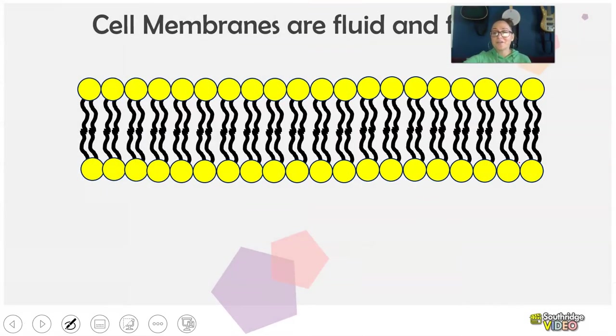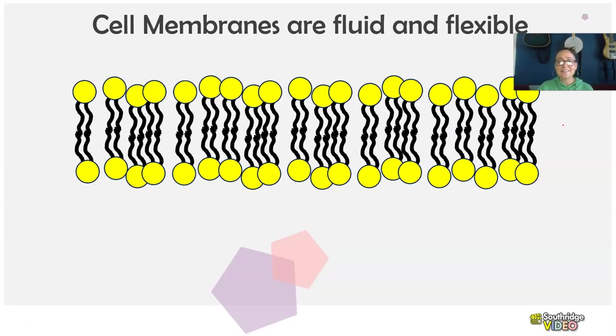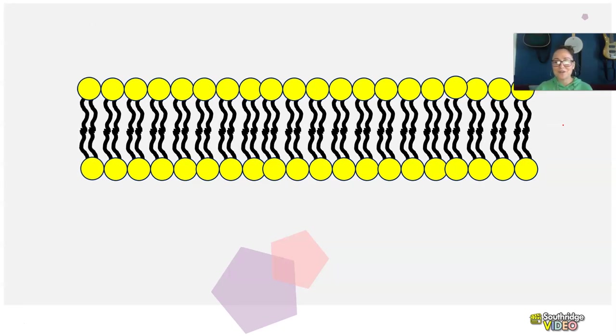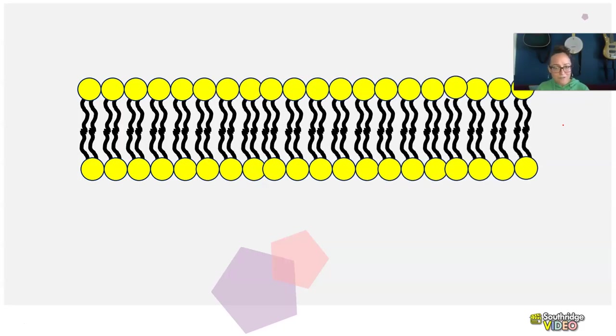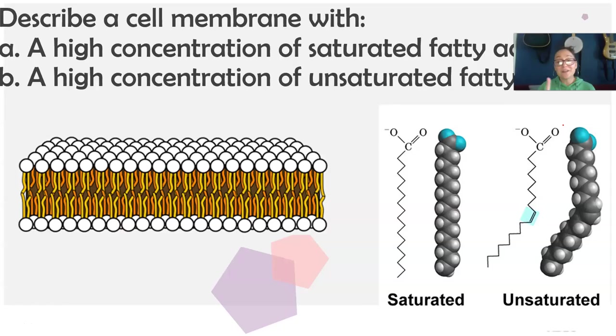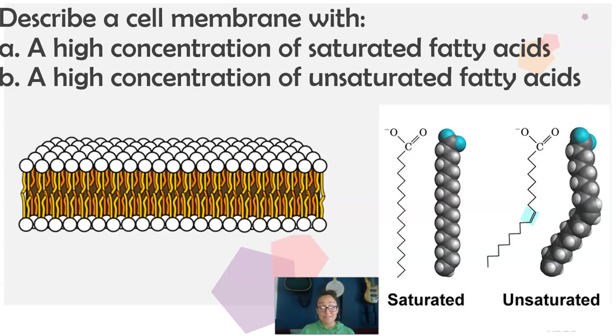Another key thing about these membranes is that they are fluid and they are flexible. We call this the fluid mosaic model. This laptop's not really good at showing my animations, but they move. They have a consistency of some thick oil, but they are flexible. Think about your blood cells when they travel through your capillaries. You want them to be flexible and not firm and rigid. That would make it very difficult for life. So I do recommend, though, Ted Ed has a good video on the cell membranes that is really good at showing the fluid mosaic model, and I recommend that video.